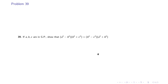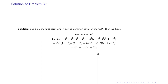Problem 39: if A, B, C are in GP, show that (A²-B²)(B²+C²) = (B²-C²)(A²+B²). Setting B = AR and C = AR², the left-hand side becomes A²(1-R²)·A²R²(1+R²). Rearranging by exchanging A² and A²R², we get A²R²(1-R²)·A²(1+R²), which equals (B²-C²)(A²+B²). Thus the equality is proven.